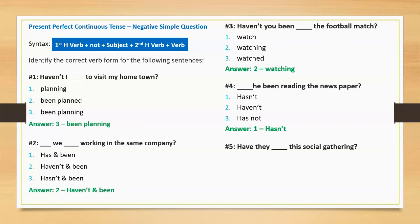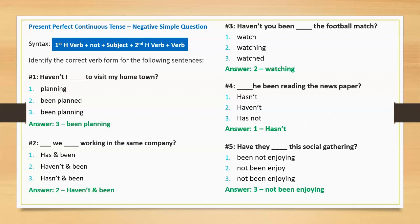Question five: 'Have they blank this social gathering?' Option one: been not enjoying. Option two: not been enjoy. Option three: not been enjoying. Correct answer: not been enjoying. Full sentence: 'Have they not been enjoying this social gathering?'